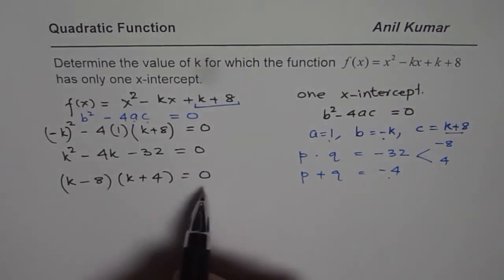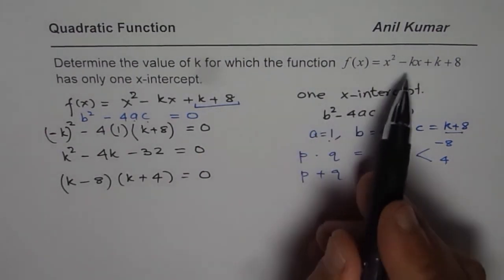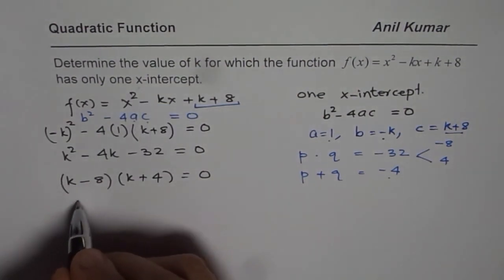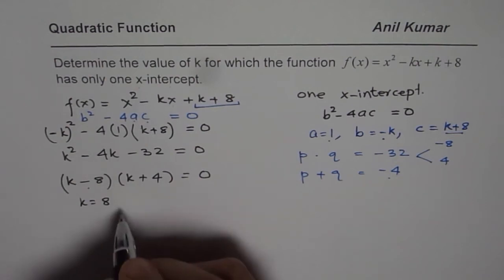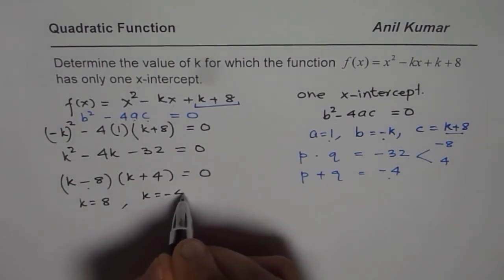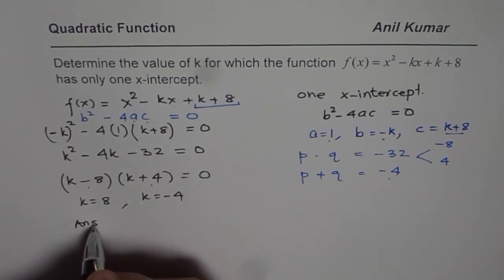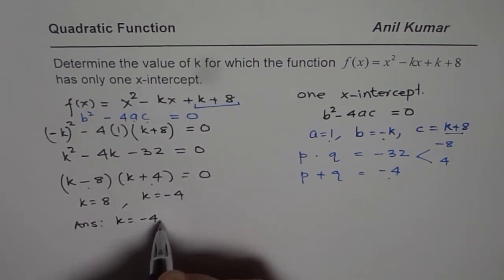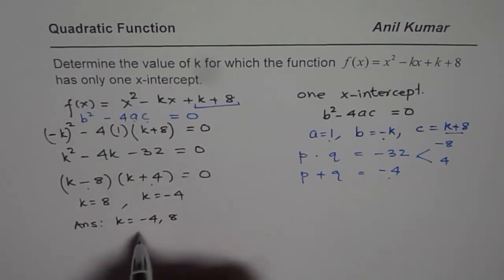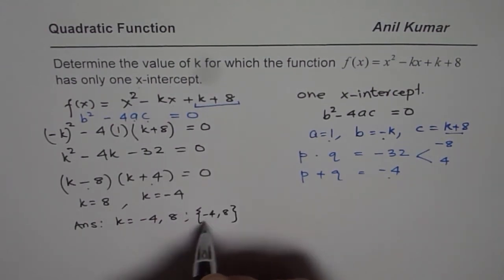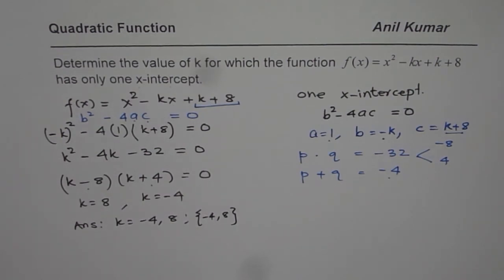So clearly we get two values of k for which this equation will have only one x-intercept. One value of k is 8, which makes the first factor 0. The other value is k = -4, which makes the second factor 0. So our answer is k = -4 or k = 8.